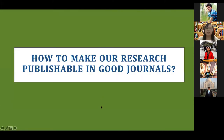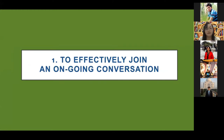That is the main sharing of my webinar today. In the following section I'd like to share what I've learned and understood in my journey of preparing and getting papers published in good journals. Now let's get started. How do we make our research publishable in good journals? From my experience, there are four things I'd like to share in order for papers to be accepted in good journals. The first thing — and also the most important — is to join an ongoing conversation effectively.